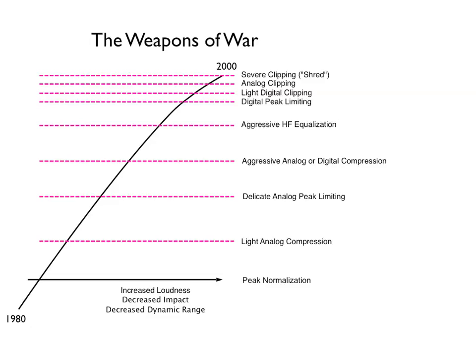The next thing that happened was somebody discovered that if we copied the signal to analog tape, or transferred analog tape to digital audio peaking it to full scale, we could get a free 6 dB loudness increase. That's because the peak-to-average ratio of analog tape is about 14 dB, or perhaps 12 dB if you saturate it more. So by setting it peak to full scale we'd get a free 6 dB compression without any work at all. Then we started to apply some light analog compression because we just couldn't compete with analog magnetic tape without doing some further compression.